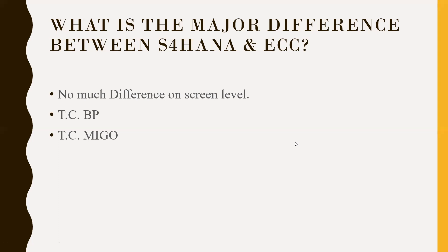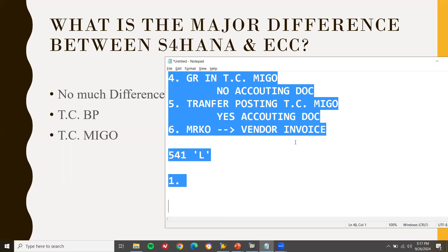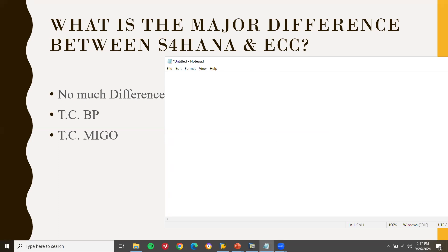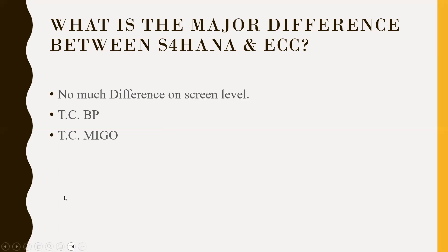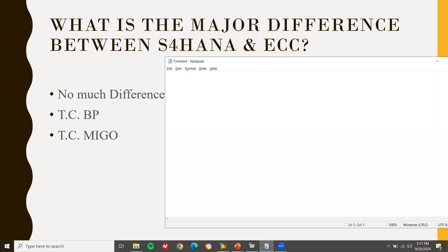What are the major differences between S4HANA and ECC? There is not much difference on the screen level. The first thing is the BP transaction. In ECC, you have SK01 for creation of the supplier and FK01 for creation of the supplier. But in S4HANA, you have only the BP transaction for creation of the supplier — Business Partner. This is a major difference between S4 and ECC.